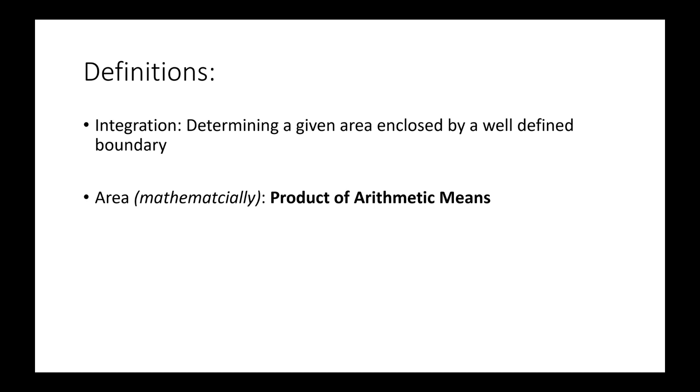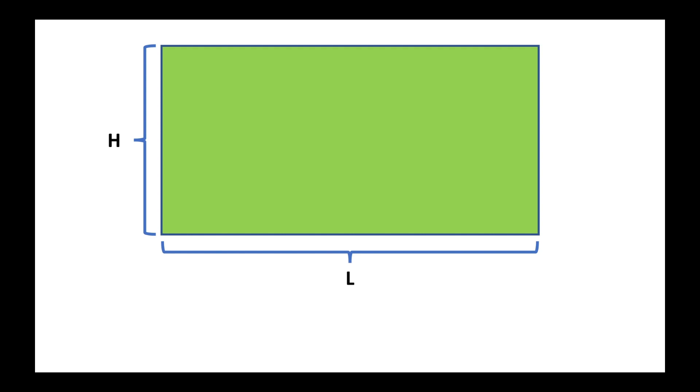To explain exactly why this definition is good, consider this rectangle. Obviously, we can find the area by multiplying the length by the height. But notice that we can split this rectangle up like this and just find the area by taking the arithmetic mean of the heights, which are the same anyways, and then multiplying it by the length. Quite clearly, this is going to give us the same area.